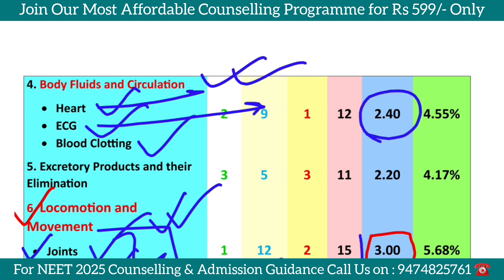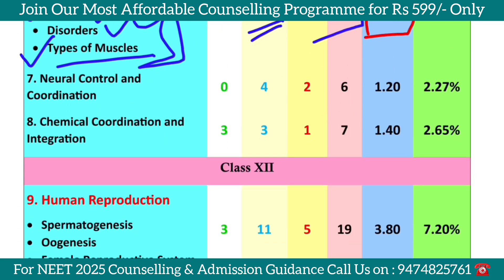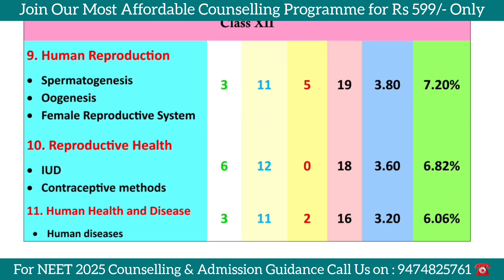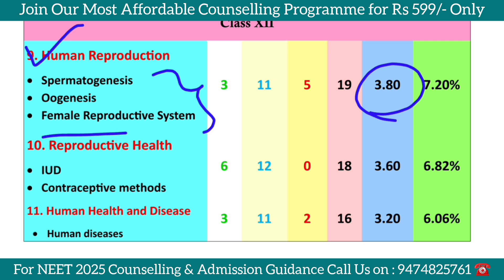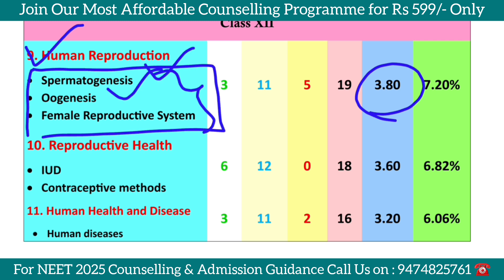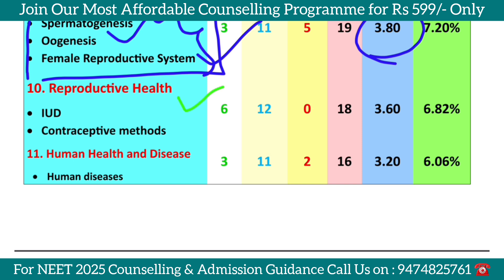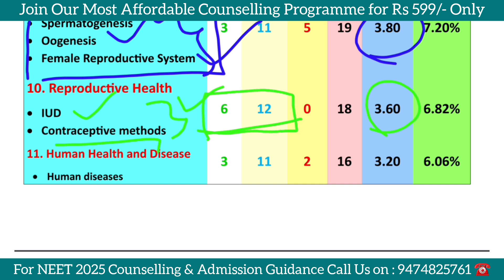Human Reproduction is a consistent question chapter covering spermatogenesis, oogenesis, the female reproductive system, fertilization, and lactation. These are very important topics. Reproductive Health covers IUD, intra-uterine devices, and contraceptive methods. These are great topics over the past 4-5 years, with focus on 3-4 questions in this chapter. The difficulty level is easy to medium level.